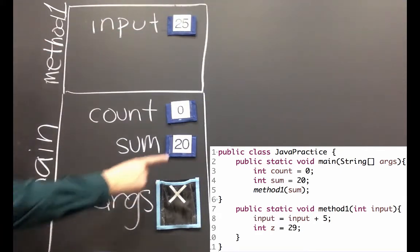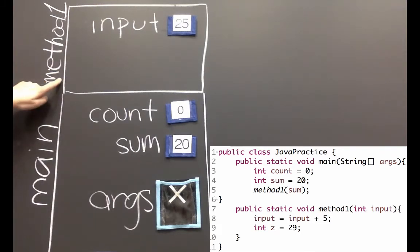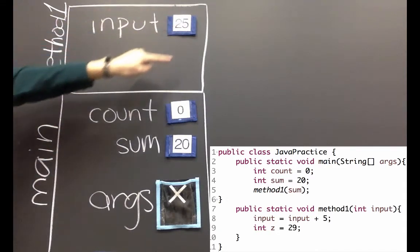It's important to notice that sum didn't change. Our stack frame for method one is separate and we can't access any of the variables in main as long as we're in method one. We can only access the variables in here.